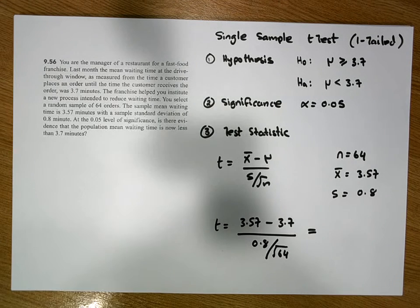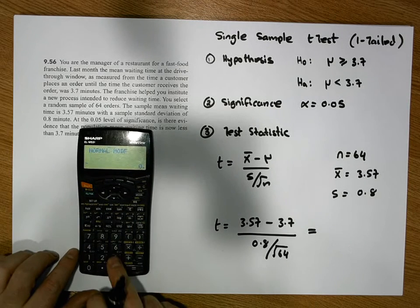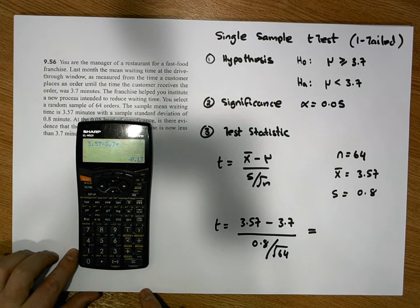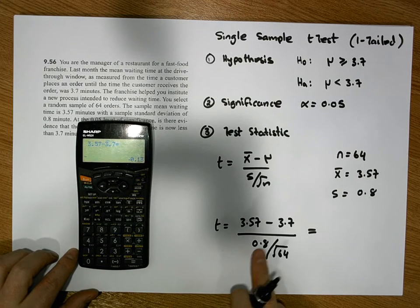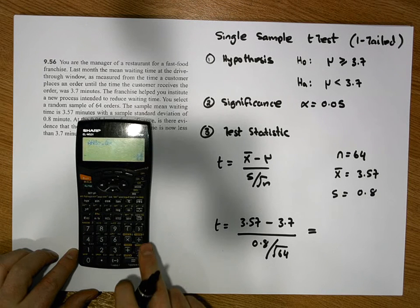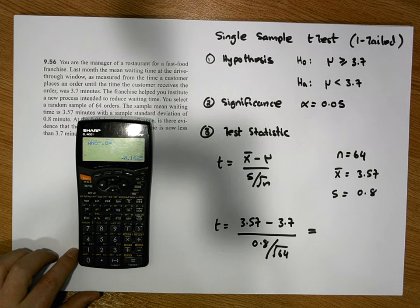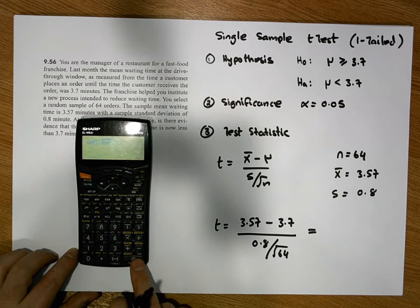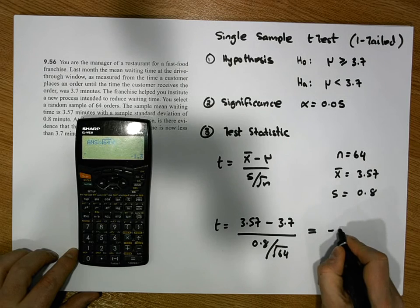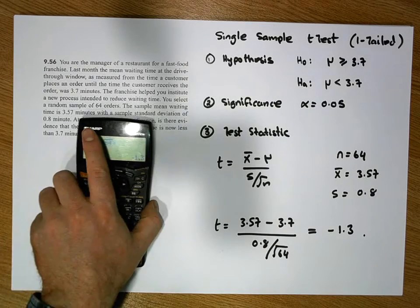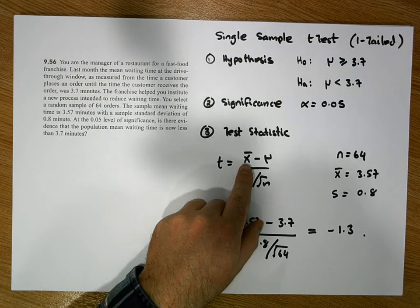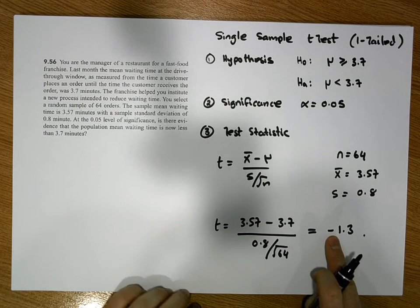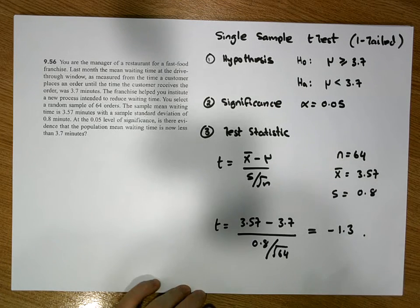Calculating on the calculator: 3.57 minus 3.7 gives minus 0.13. Dividing by 0.8 gives minus 0.16, then multiplying by the square root of 64 gives a test statistic of minus 1.3. The evidence is 1.3 standard units away from the mean, and the negative sign means the evidence is in the left-hand tail.